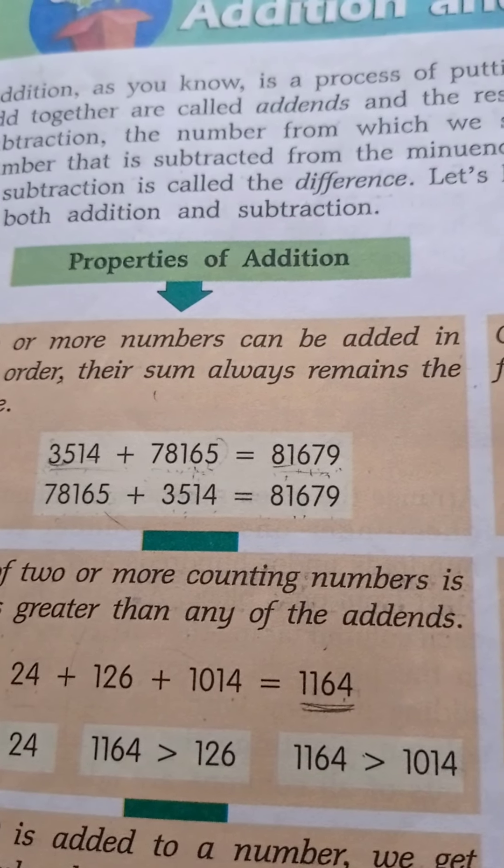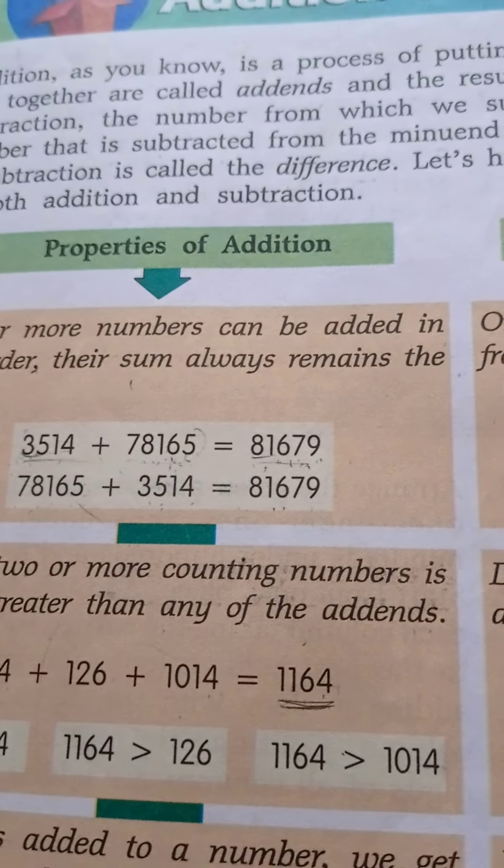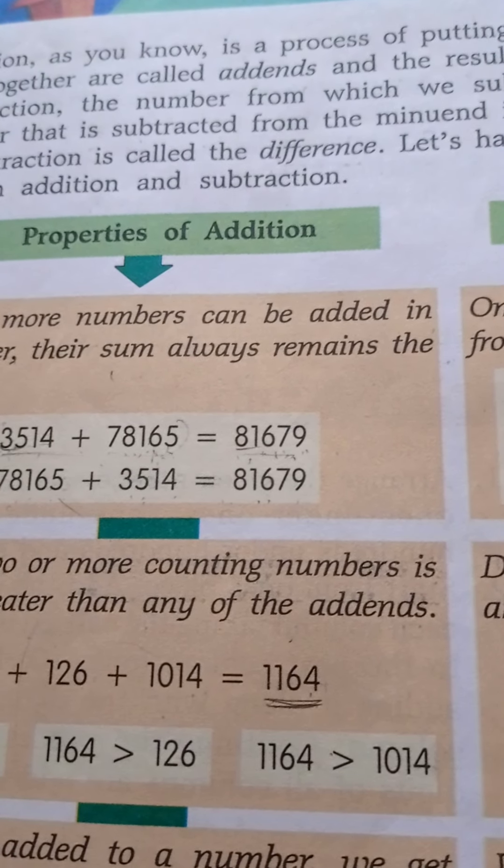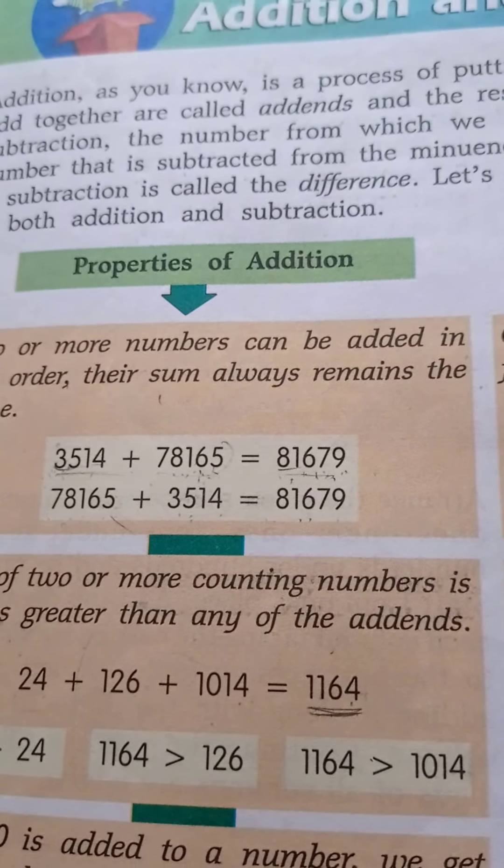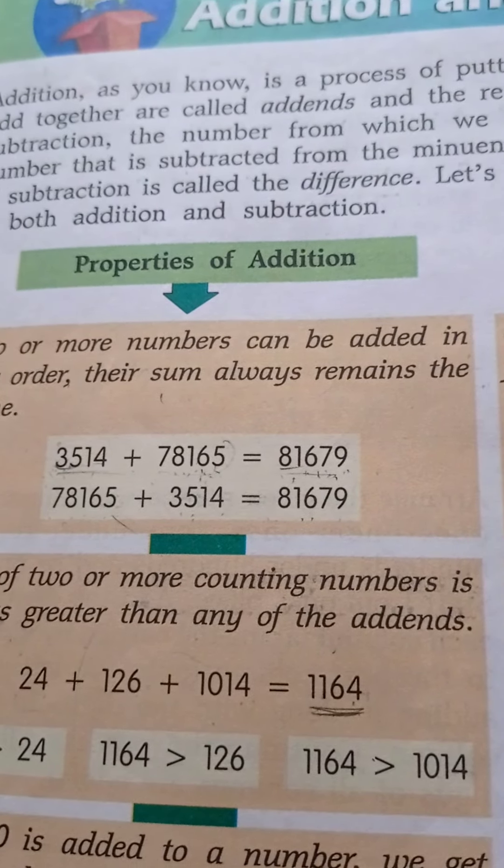In subtraction, the number from which we subtract is called the minuend. The number that is subtracted from the minuend is called the subtrahend. The result of subtraction is called the difference. Let's have a look at some of the properties of both addition and subtraction.